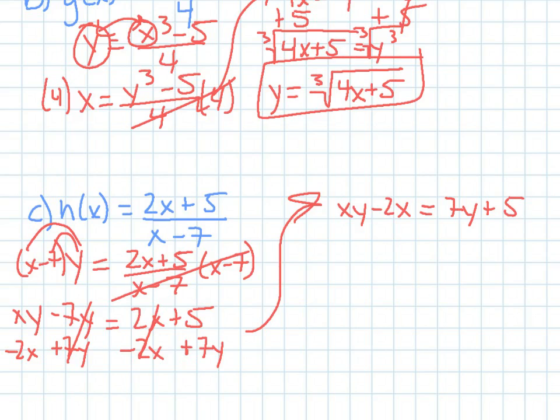And here, because they have both x's in common, I'm going to factor out an x. I'm going to divide both sides by y minus 2 to get x by itself.